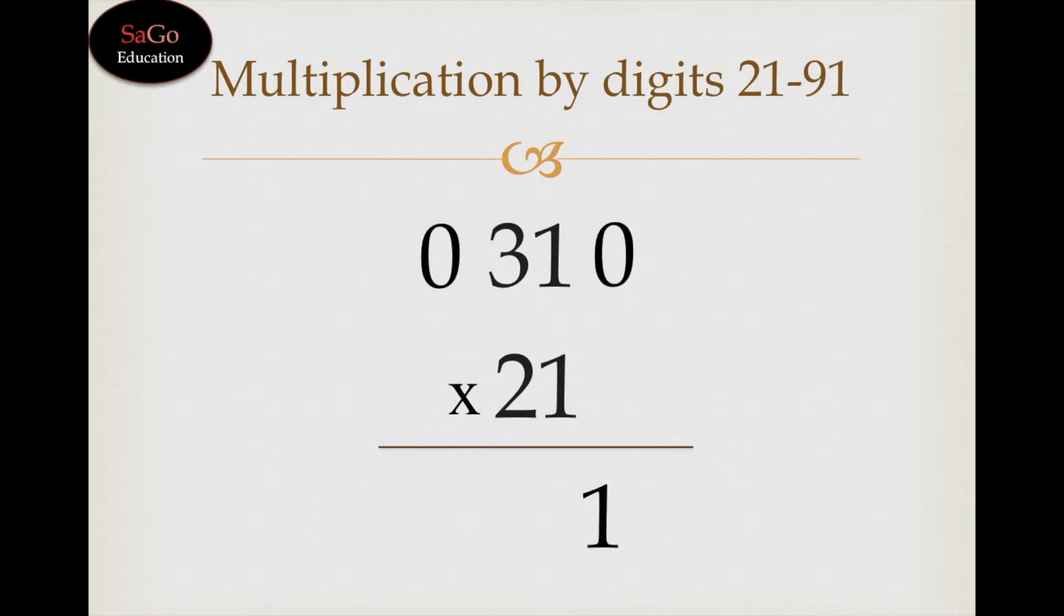2 zeros are 0 plus 1 makes 1. Write 1. Now move forward. 2 would be multiplied—this pattern would be same—2 would be multiplied by 1 and add the adjacent digit which is 3.